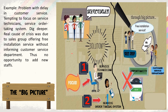Let's say we have a company selling water filters. We have a group of customers who are very disappointed with the service — specifically, there is a service delay. Of course, we would initially focus on the customer service department. The solution would seem to be forcing the service technicians and the order-taking system to work faster. However, when we look at the big picture, the problem didn't come from the customer service department but from the sales group.